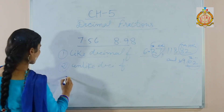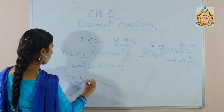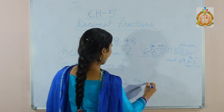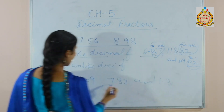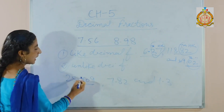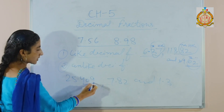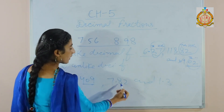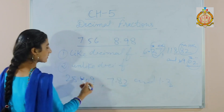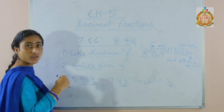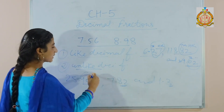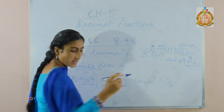And unlike decimal fractions — for example 5.409, 7.82, and 1.3. In these three figures, see in the first figure there are three decimal places: 10th, 100th, 1000th. And here only two decimal places, and here only one decimal place. So these three are unlike decimal fractions because these decimal fractions have different decimal places. Now let's start exercise.